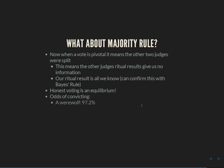Given that, honest voting will be an equilibrium under majority rule, because when you're pivotal you have no information except your own, so you might as well vote honestly. Under majority rule, the odds of convicting a werewolf are 97.2% — we convict the guilty much more often — and we almost never convict a human incorrectly. Furthermore, as the number of judges gets large, majority rule becomes perfectly accurate.